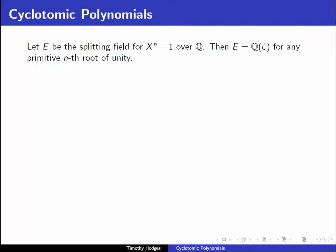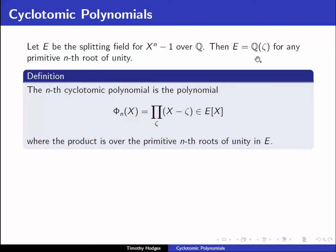So let's now define the cyclotomic polynomials, and for this we return to the case where we're working over the rationals Q. Let E be a splitting field for x to the n minus 1 over Q; E is obviously generated over Q by zeta for some or any primitive nth root of unity. The nth cyclotomic polynomial is defined to be phi_n of x, which is the product over all primitive nth roots of unity zeta of (x minus zeta). Then since x to the n minus 1 is the product of (x minus zeta) over all nth roots of unity, and this set decomposes as the disjoint union of all primitive dth roots of unity for d dividing n, we must have that x to the n minus 1 is the product of these phi_d(x).